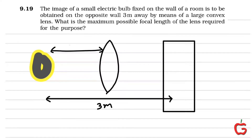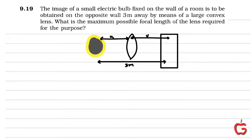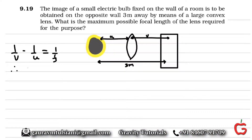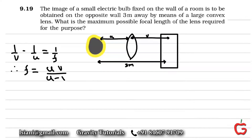This is going to be object distance U, and this is going to be the image distance V, and we need the maximum focal length of this lens. We are going to use the lens formula, which is 1/V minus 1/U equals 1/F. Therefore, we get the focal length to be U times V divided by U minus V.